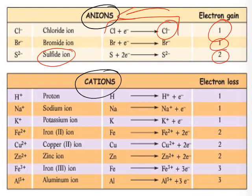Cations are positively charged and lose electrons. H⁺ (proton): hydrogen loses one electron to become H⁺. Sodium: electron configuration K2 L8 M1 — it loses one electron to become Na⁺ plus one electron. Potassium: K gives K⁺ plus one electron.